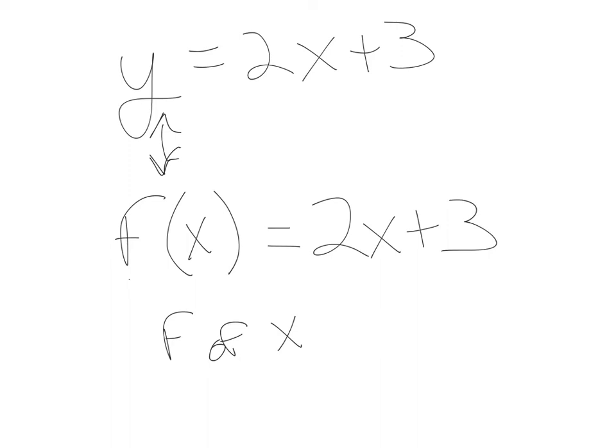Function notation literally means instead of writing y we're writing f of x. If we have two functions we might write f of x and if we have another function maybe not f we have to name it something else just like we have to change variables. In this case we could call it g of x or h of x and those would be different functions. So instead of using y we can use these different function notations to relate different functions. f of x, g of x, h of x.